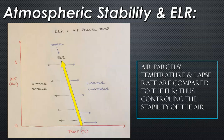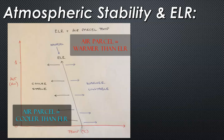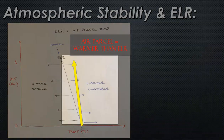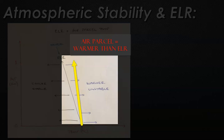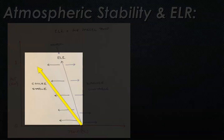However, if the air parcel has a different lapse rate, starting at the same surface temperature as the ELR, it will diverge. If the air parcel cools slower than the ELR, it falls to the right on the diagram — classified as unstable, because the parcel remains warmer than the surrounding environment at that altitude. If it cools faster than the ELR, it becomes stable, unable to rise and tending to sink.